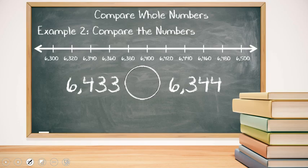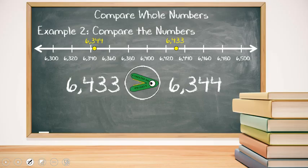If we look at the next place value, the hundreds place, one's in the three hundreds and one's in the four hundreds. So if we place them on the number line, 6,433 would be greater than 6,344. Awesome.